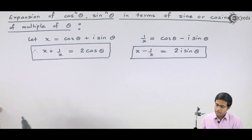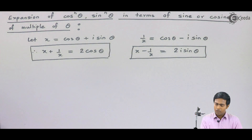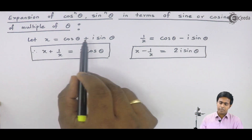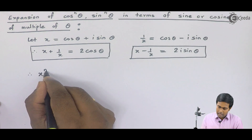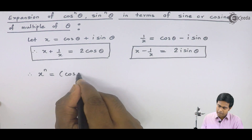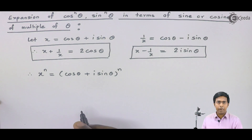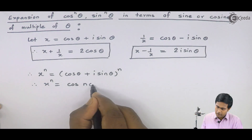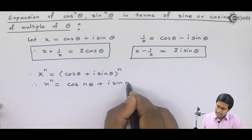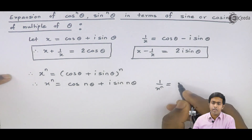These two results are helpful for deriving the relation of powers of trigonometric ratios in terms of multiples of theta. Similarly, we will derive one more relation. Considering the nth power of this complex number, by De Moivre's theorem, x^n = cos(nθ) + i·sin(nθ), and similarly 1/x^n = cos(nθ) - i·sin(nθ).